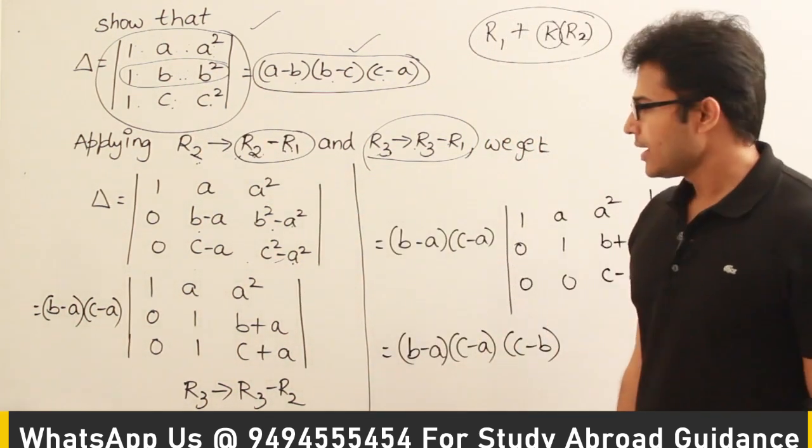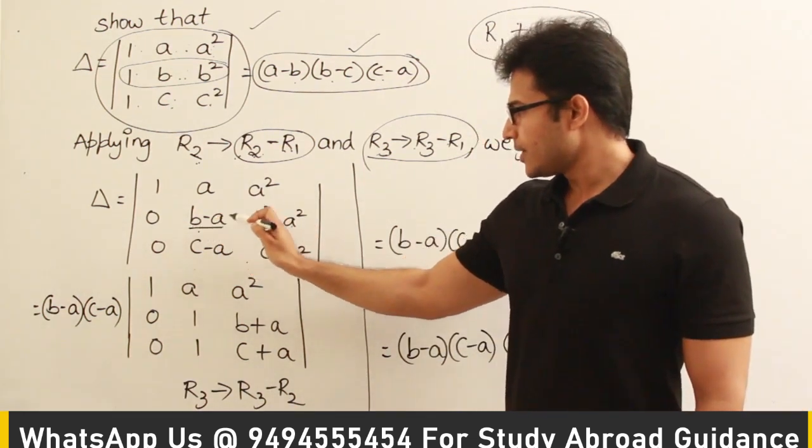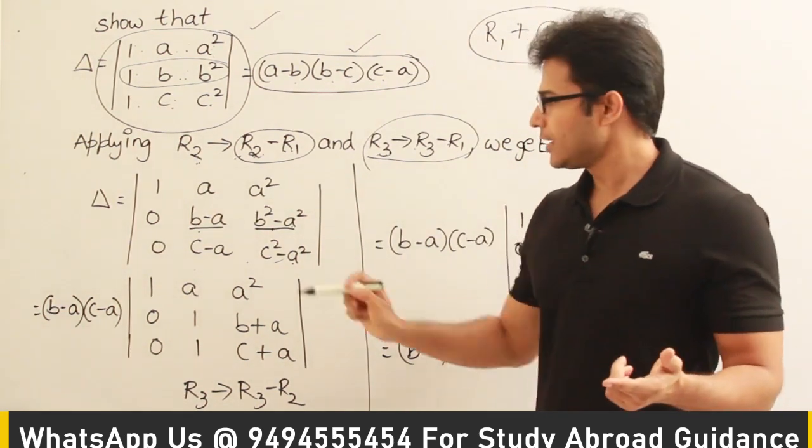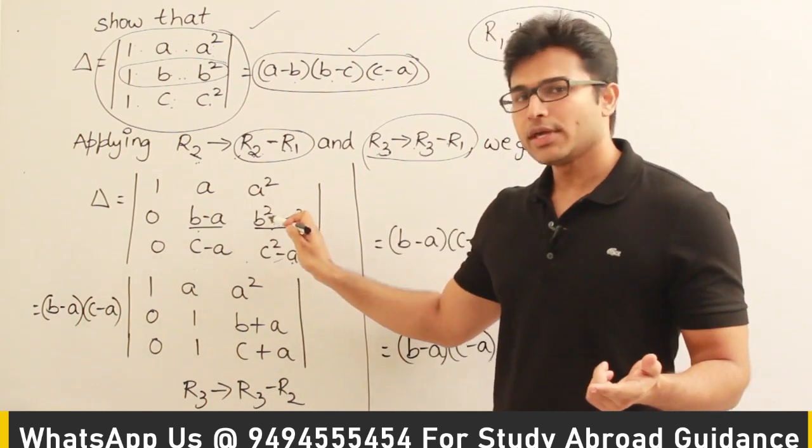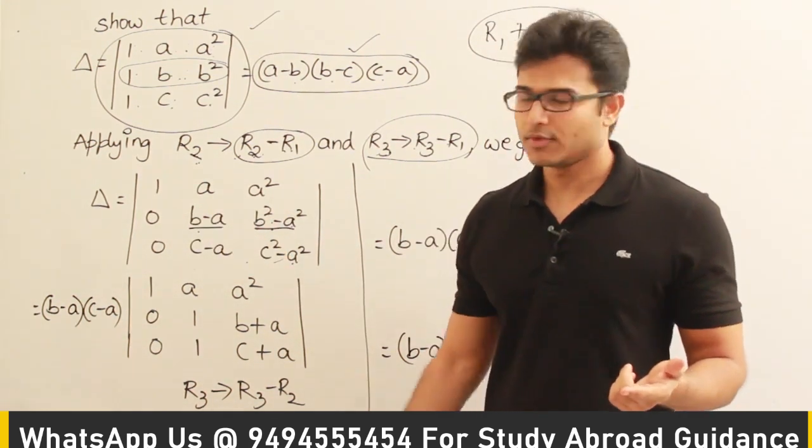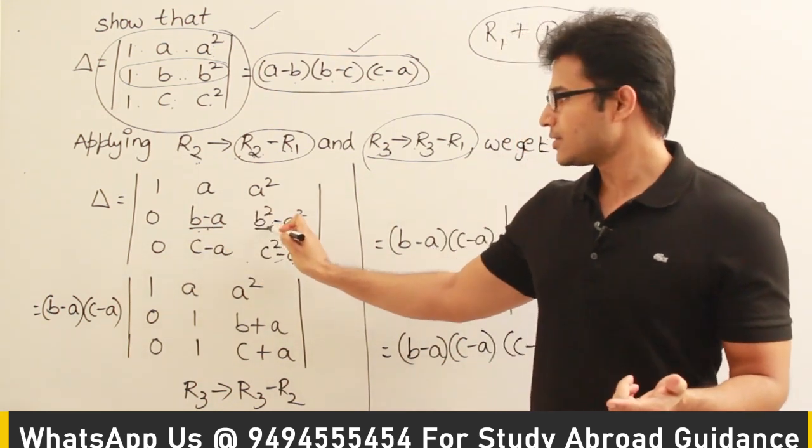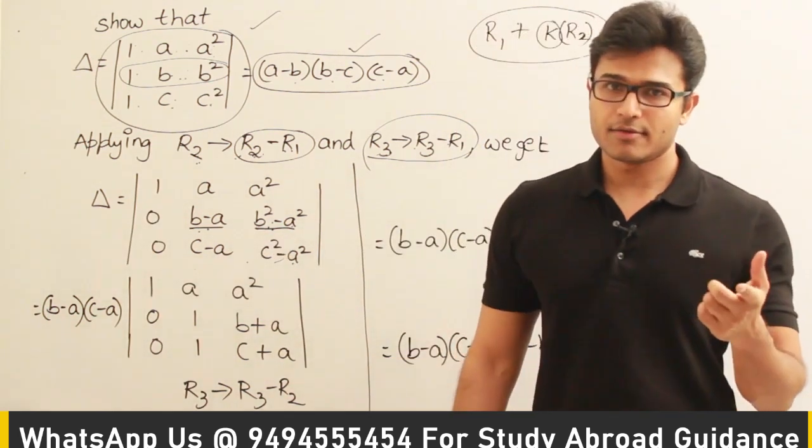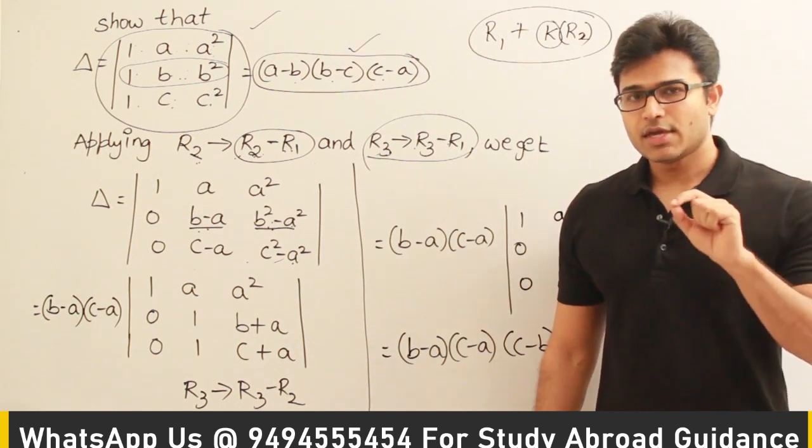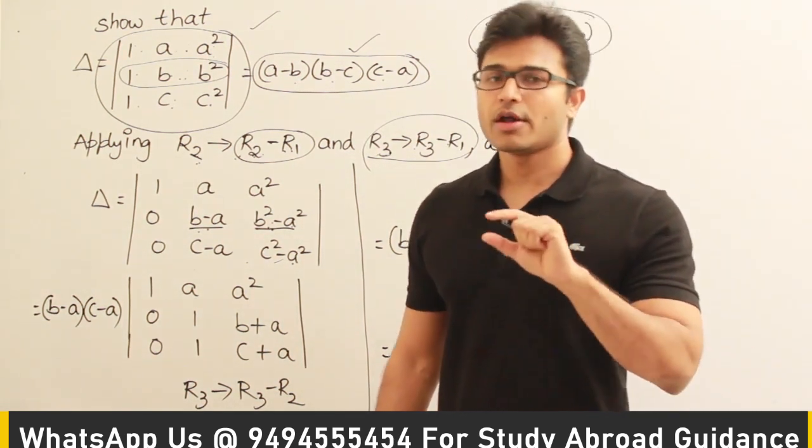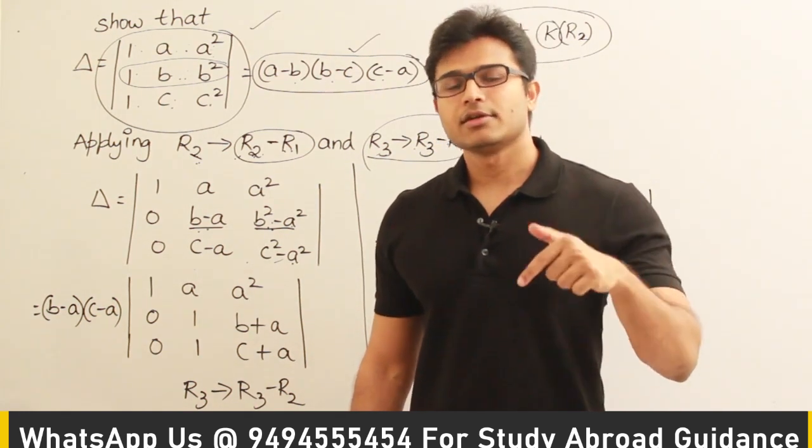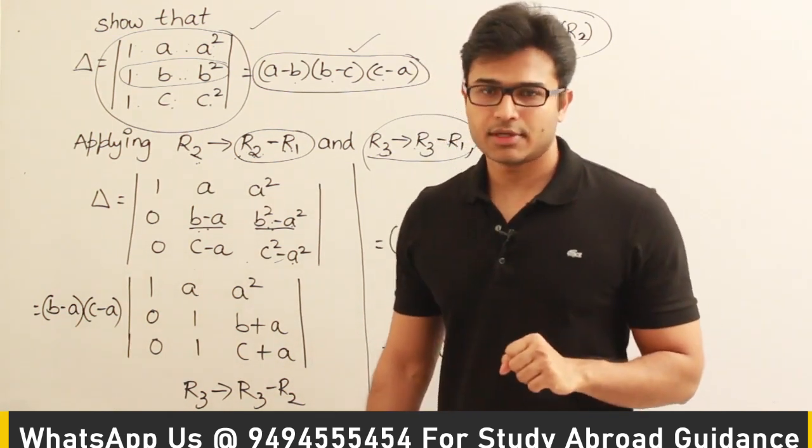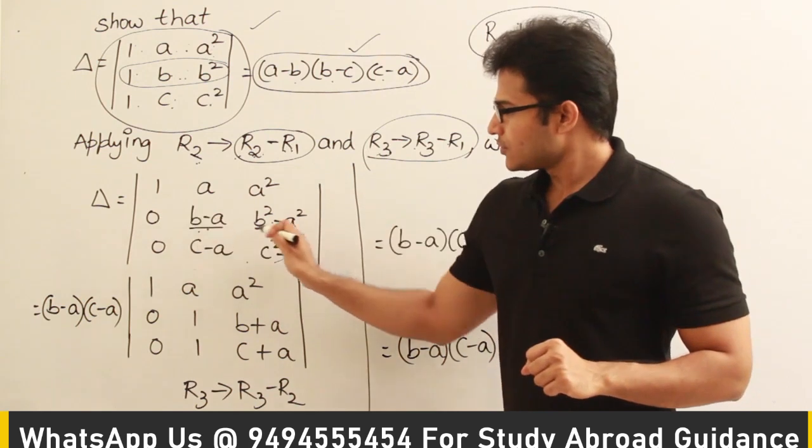And next thing is we can write it as b minus a, and this term b² minus a² is nothing but (b minus a) times (b plus a). Therefore, in this entire row we can take out b minus a as common because here it is b minus a, and here there is (b minus a) times (b plus a). Therefore I can pull out b minus a. This is also depending on a. If you remember that theorem, when we have when we multiply all the elements of a row or a column with a constant, then the resulting determinant is nothing but we're taking out that constant and then finding out the remaining determinant.